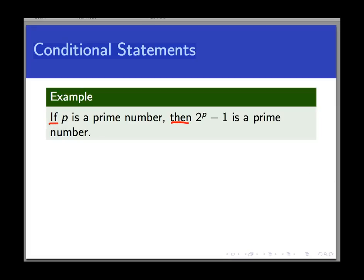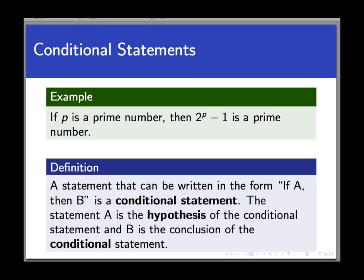Any statement that has this form or can be rewritten in this form—if something, then something else—is called a conditional statement, because it's saying that if the condition is met, then something automatically happens. Technically we say that the statement following the if, the condition, is called the hypothesis, and the statement following the then is the conclusion.